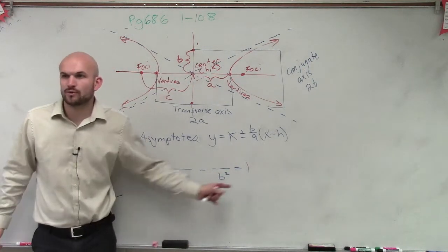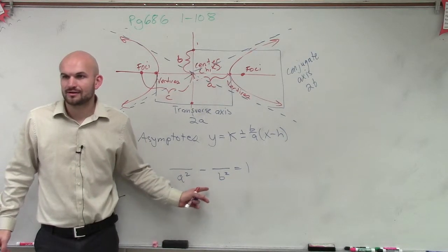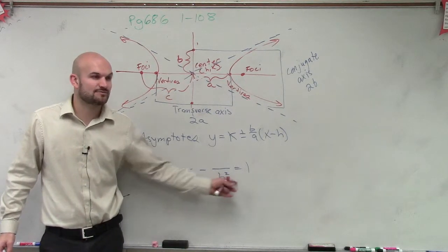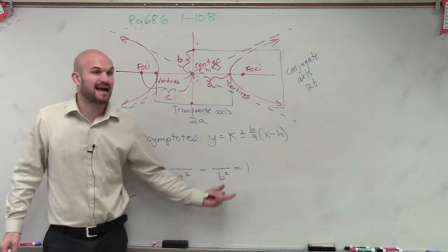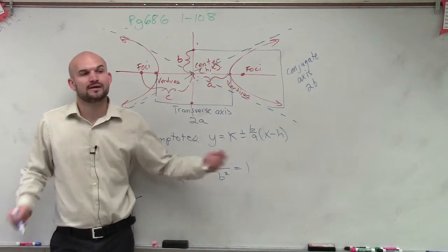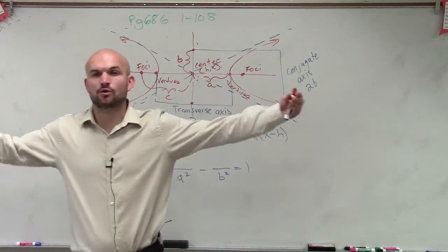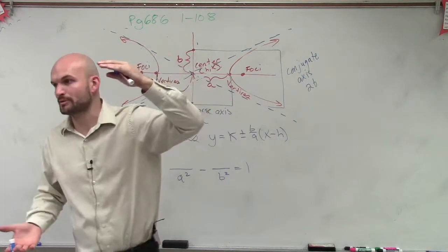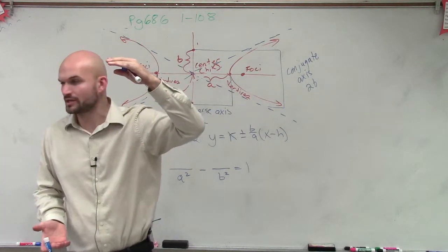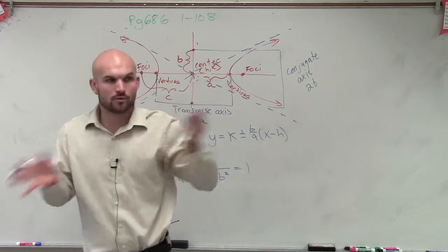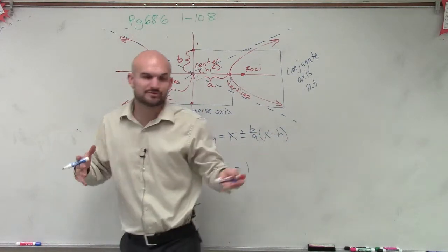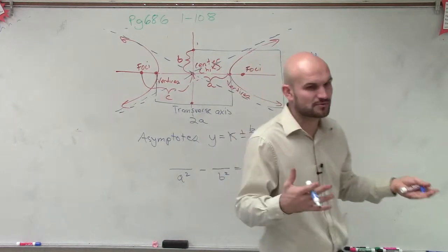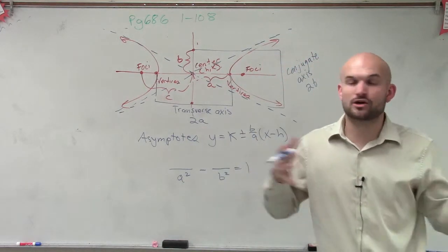Remember, denominator, whatever was larger, that's what we put under. Like if our major axis of symmetry was horizontal, then we put the larger number under the x. If it was vertical, we put the larger number under the y. That was for an ellipse. So whatever was larger, whatever axis of symmetry, our major axis we want to use, we'd put that larger number either under the x or the y.